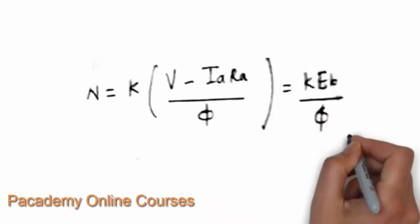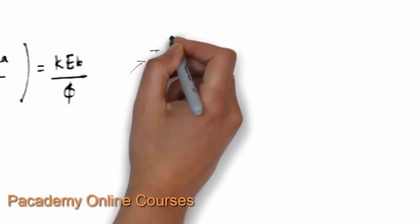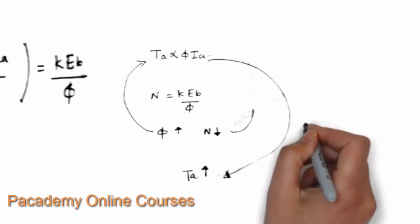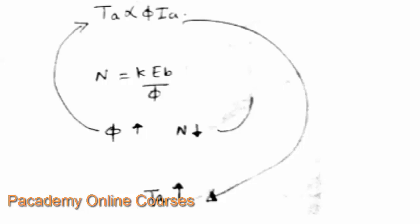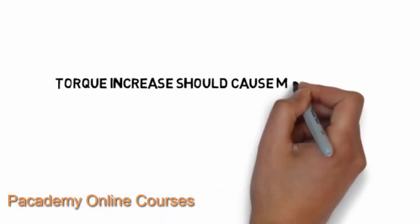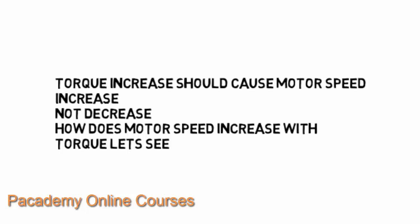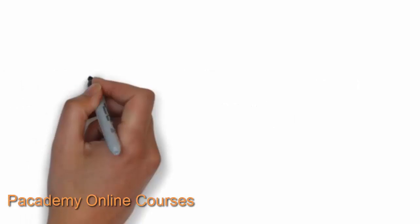Now we find the relationship between torque and speed. The speed is proportional to K·E_B / φ, so it is proportional to back EMF and inversely proportional to flux. The torque developed at the armature is directly proportional to flux and armature current. From these two equations we can derive the torque-speed relationship. If torque increases in the armature, how does that affect the motor speed?